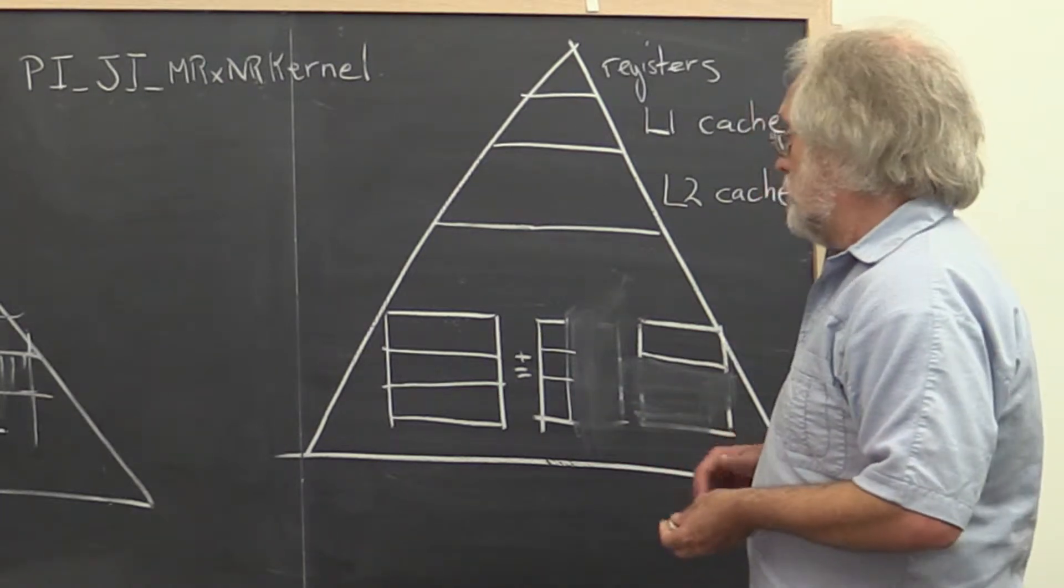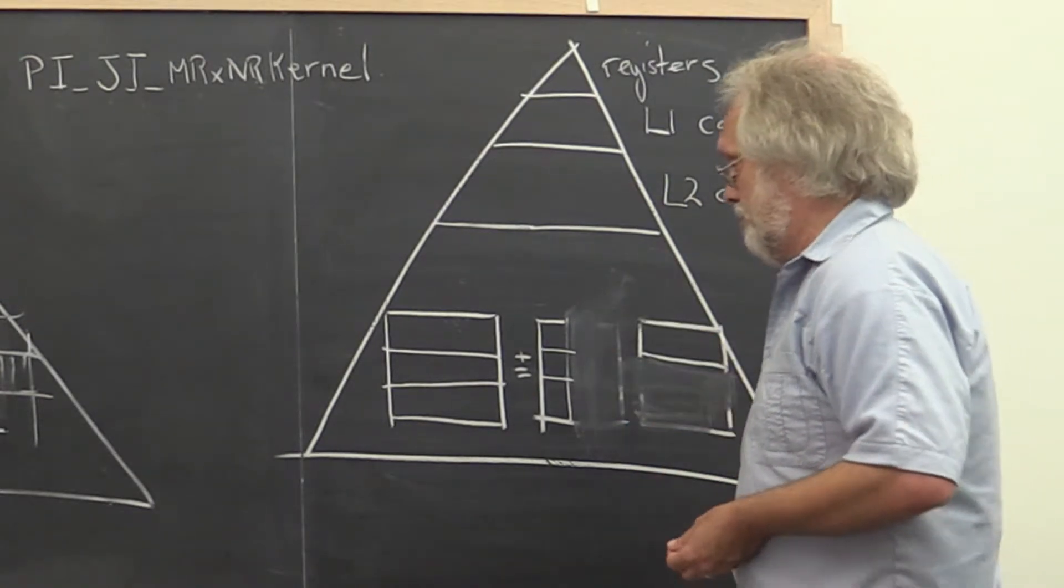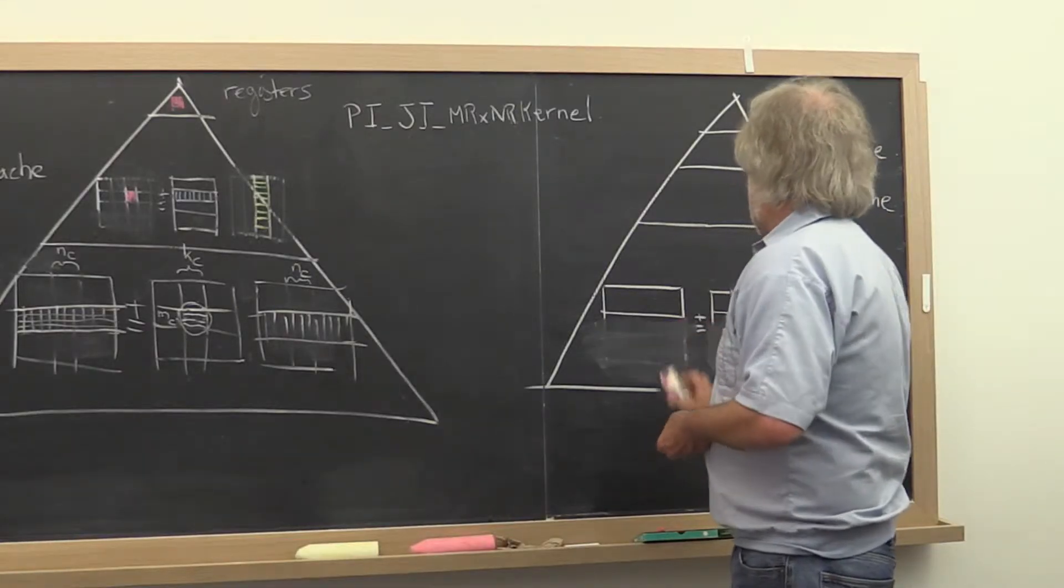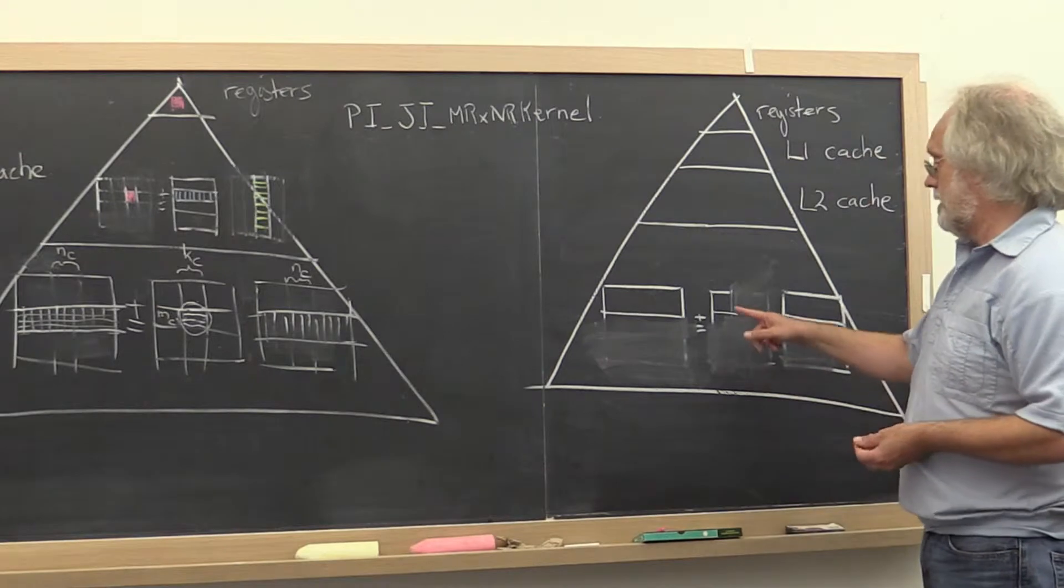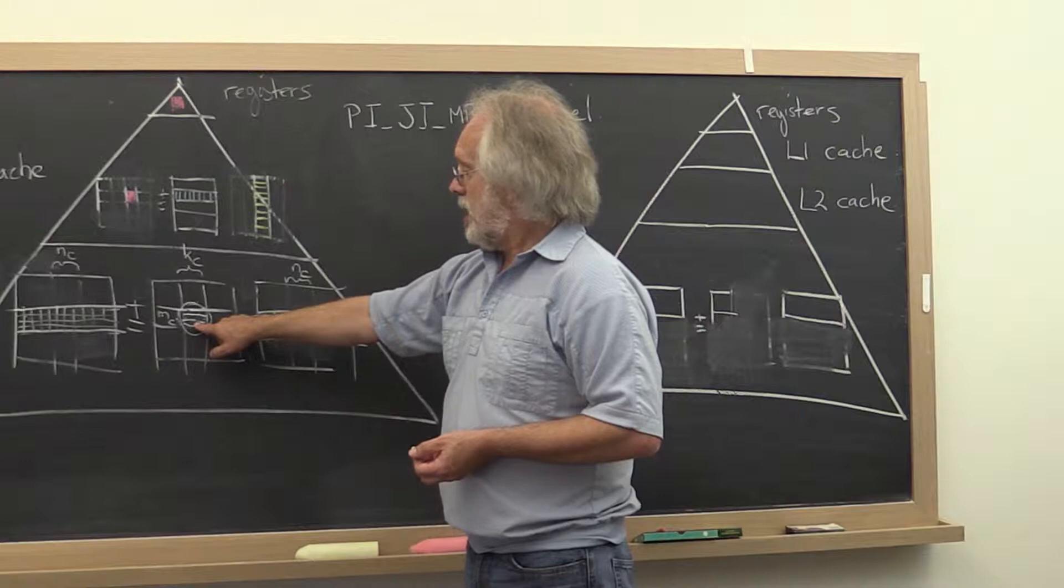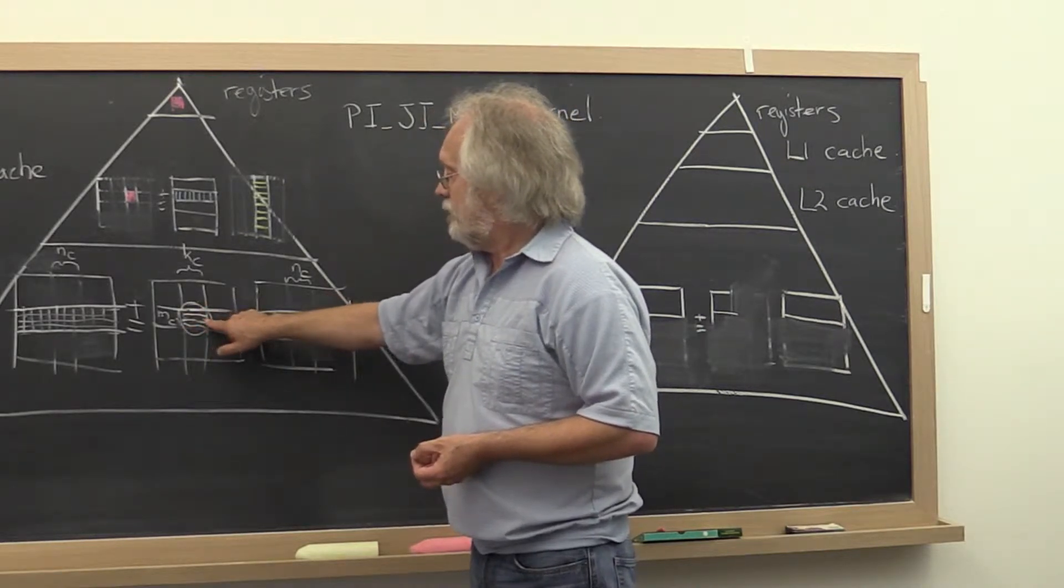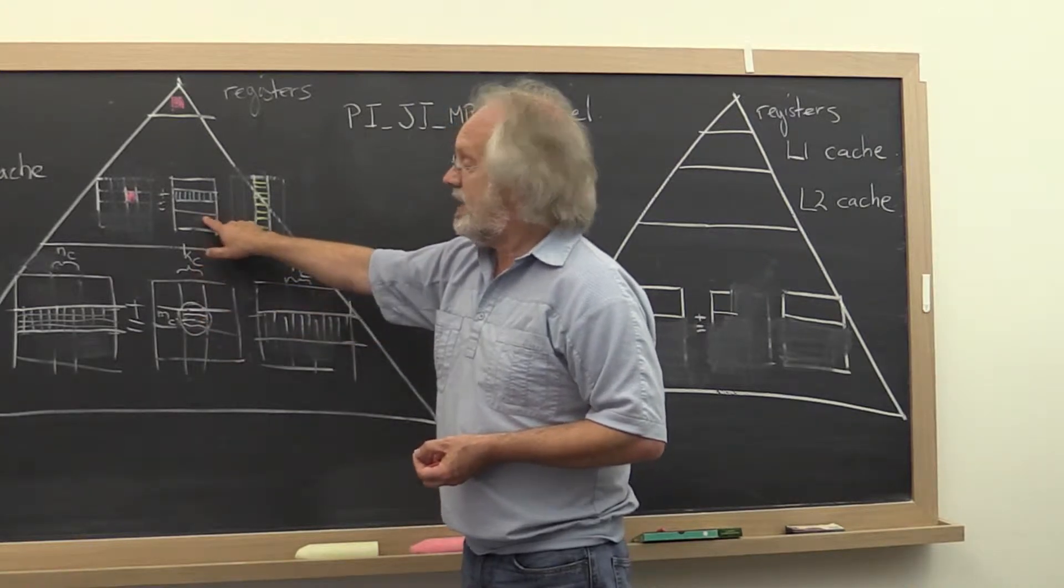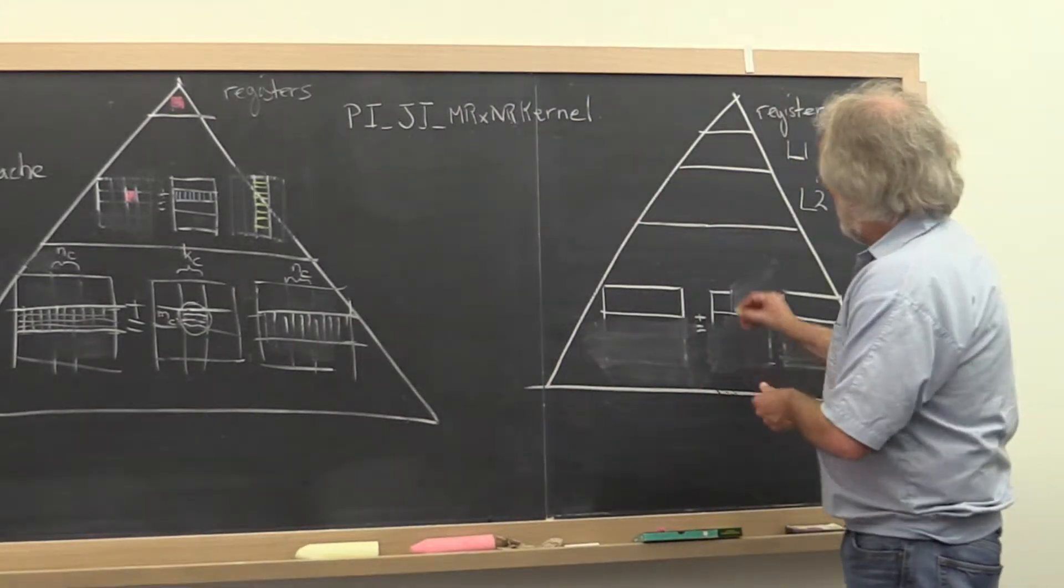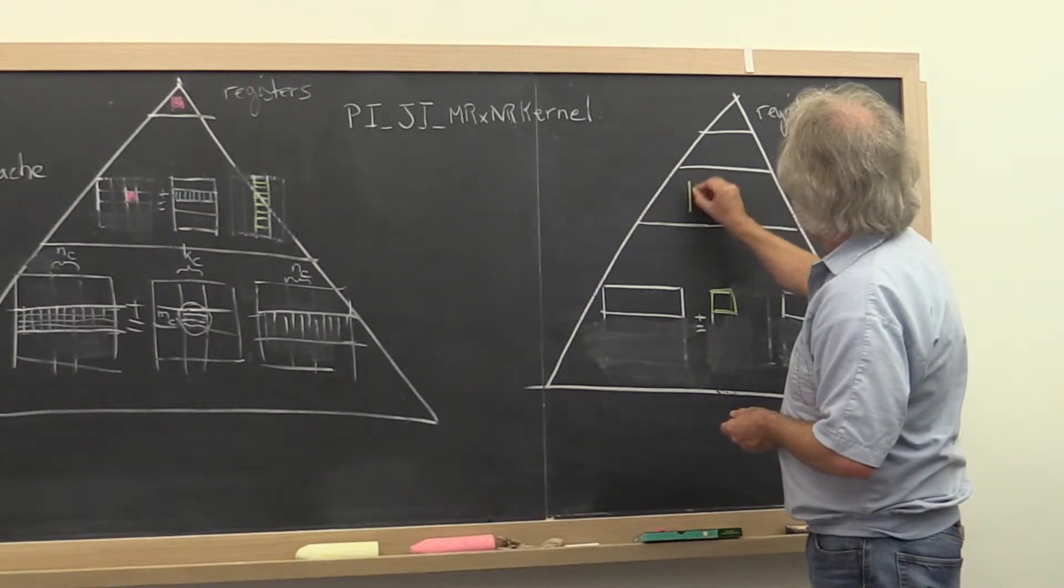Let's home in on one of those. How do we implement that matrix matrix multiply? Well, that puts us right here in this picture. And what we empirically determined was that this block of A should be sized so that it can reside in the L2 cache. So let's picture that. Let's take this block of A and let's picture it now residing in the L2 cache.